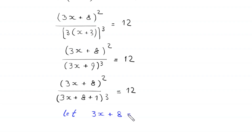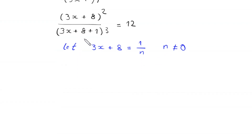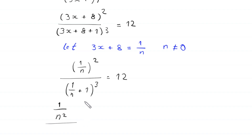Now we suppose that 3 times (x + 8) equals 1 over n, where n cannot equal 0. Substituting, the equation becomes (1/n)² divided by (1/n + 1)³ equals 12. The numerator (1/n)² becomes 1 over n squared, divided by (1/n + 1)³ equals 12.